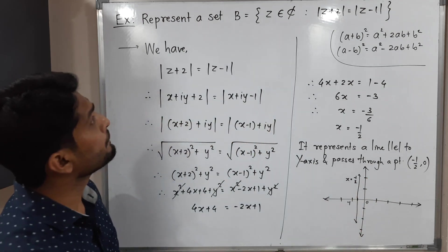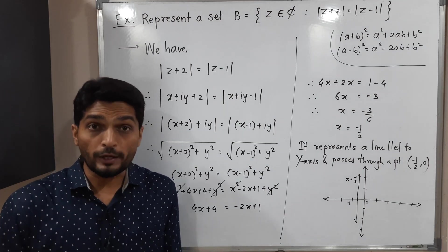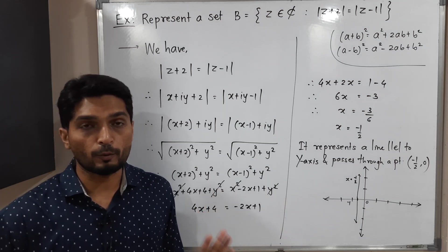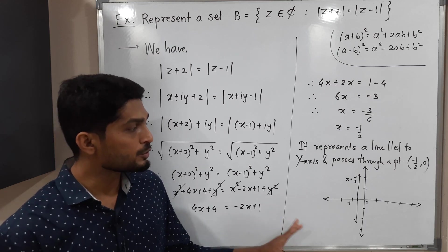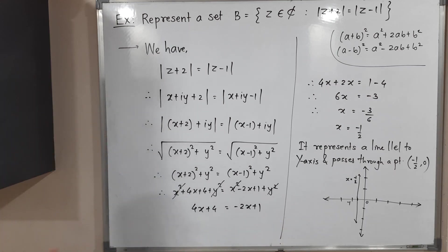That means that B is a set of all points on this line. So in this way, we have represented the given set B on a complex plane. Make a screenshot of it. Then we will stop. Thank you. See you.